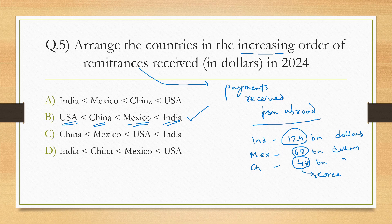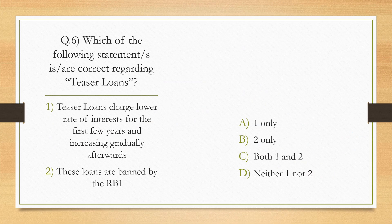Which of the following statements regarding teaser loans is or are correct? Teaser loans charge a lower rate of interest for the first few years and increase gradually afterwards. These loans are banned by the RBI. Options: 1 only, 2 only, both 1 and 2, neither 1 nor 2. The correct answer is A — 1 only. Teaser loans do charge lower initial interest rates, but they are not banned by the RBI.